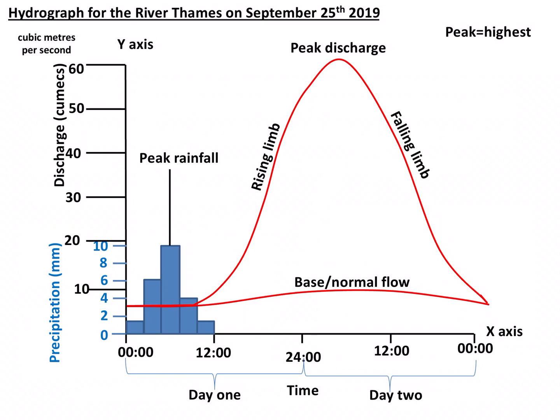In order to assess if a river will flood, it is important to know the time between peak rainfall and peak discharge. This is called the lag time. The lag time for this hydrograph is approximately 22 hours. Rivers with a short lag time are more likely to flood.